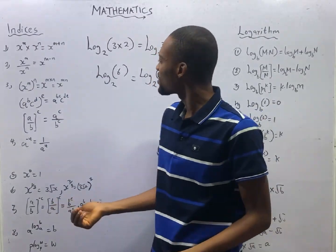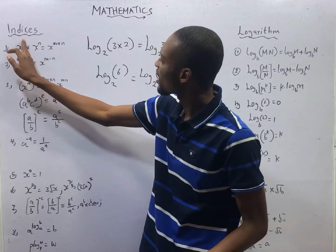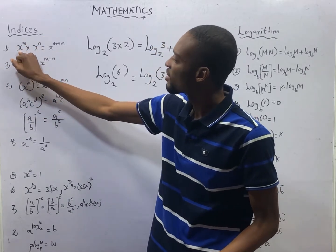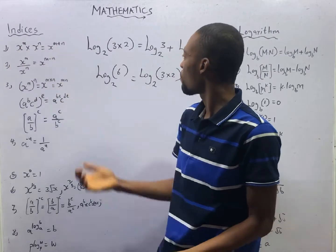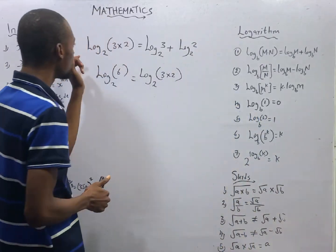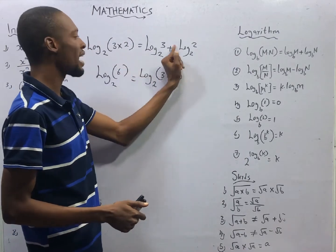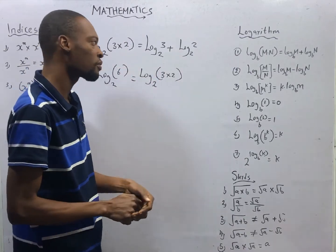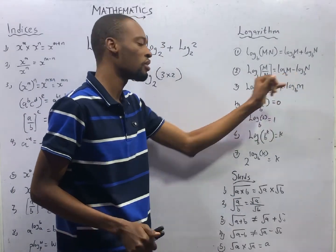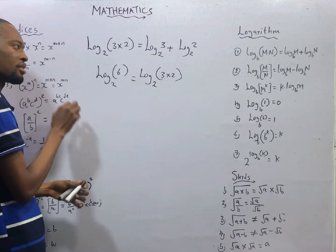Just like indices — indices says once you have a similar base and different powers, you take one of the bases and add the powers. Logarithms work the same way. When you have a log of a multiplication, you add. Multiplication leads to addition. Division leads to subtraction in logarithms, and also division leads to subtraction in indices.